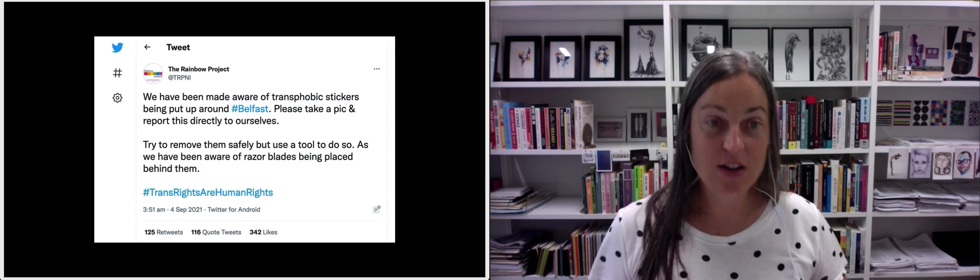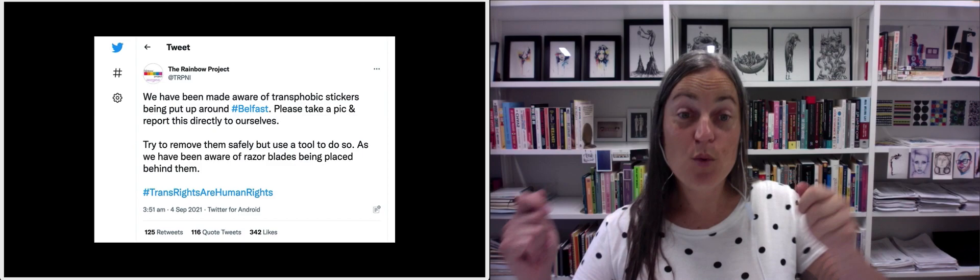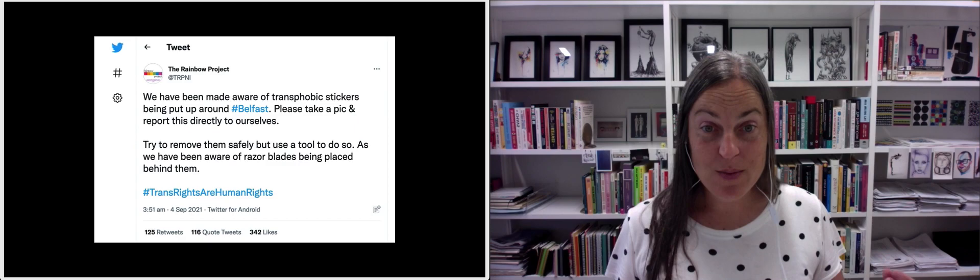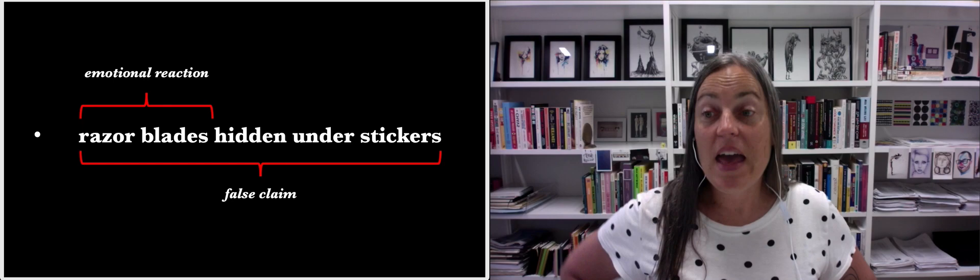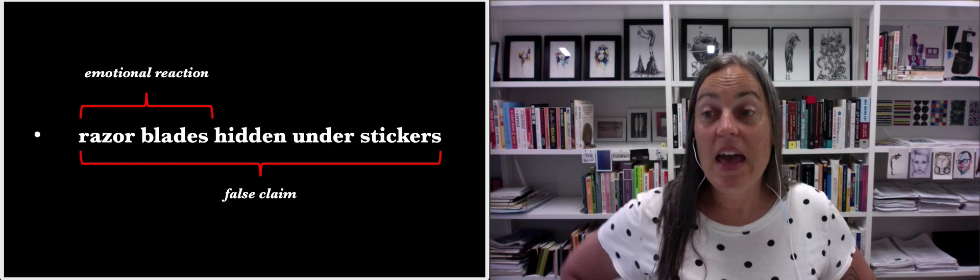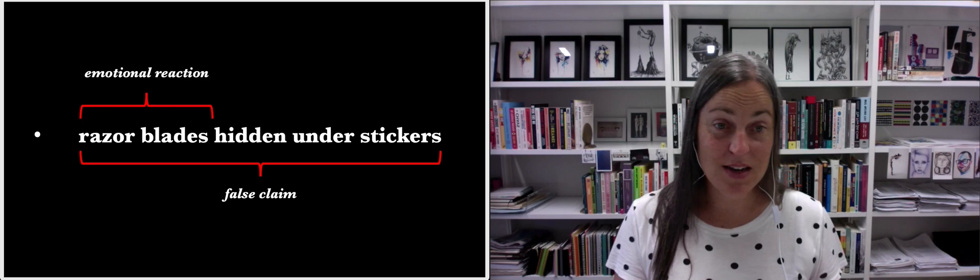If gender critical feminists had been going around putting razor blades under stickers, of course it would be appropriate to have a strong emotional reaction to that, causing people to get their fingers sliced open merely for trying to remove political messaging, is repugnant. So this idea that there are razor blades under gender critical stickers is false information disseminated by gender identity activists in order to elicit what would be an appropriate emotional response to correct information. That emotional response, outrage against gender critical feminists, helps to bring supporters to the gender identity activists side, and to strengthen commitment from people who are already allied with that side.